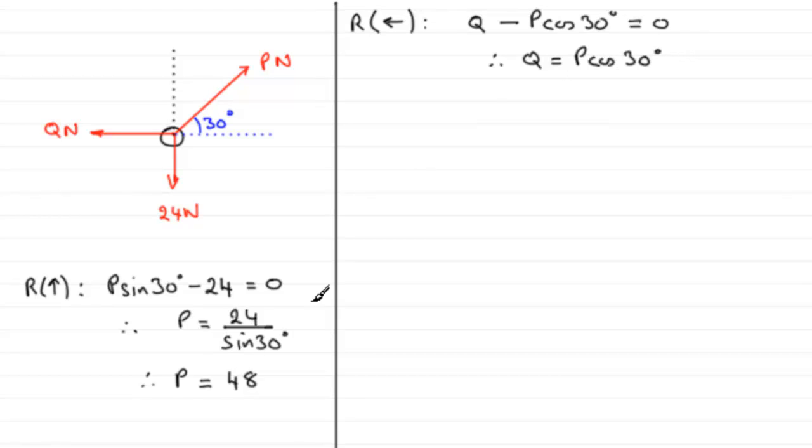So therefore Q is going to be equal to P cos 30 degrees. We know P - it was 48. So therefore Q would equal 48 multiplied by the cosine of 30 degrees. And if you do that, you'll end up with 41.569 and so on. And if we round that to one decimal place, it'll be 41.6 Newtons.